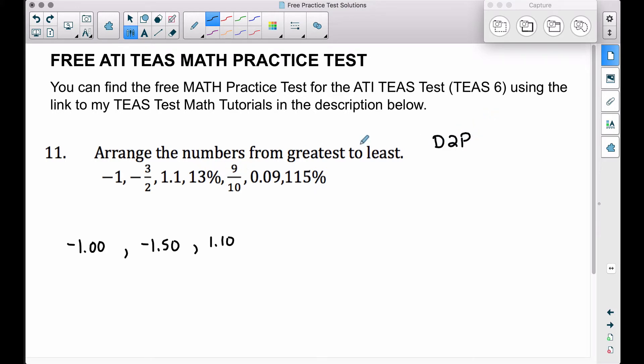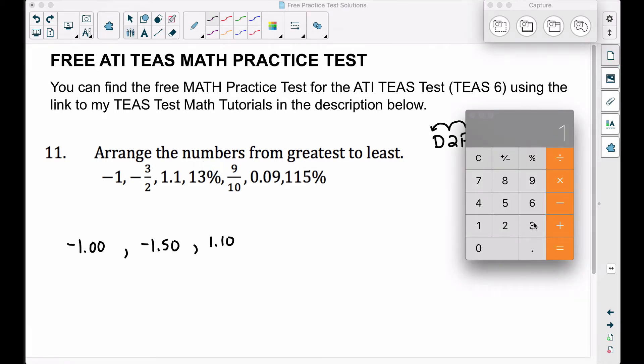Thirteen percent - a way that we can convert a percent to a decimal, if we want to go from a percent back to a decimal, we're going to move our decimal two places to the left and drop the percent symbol.